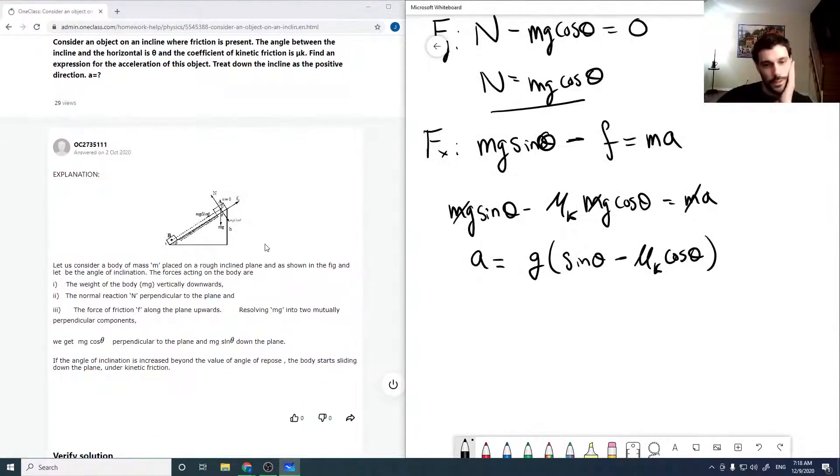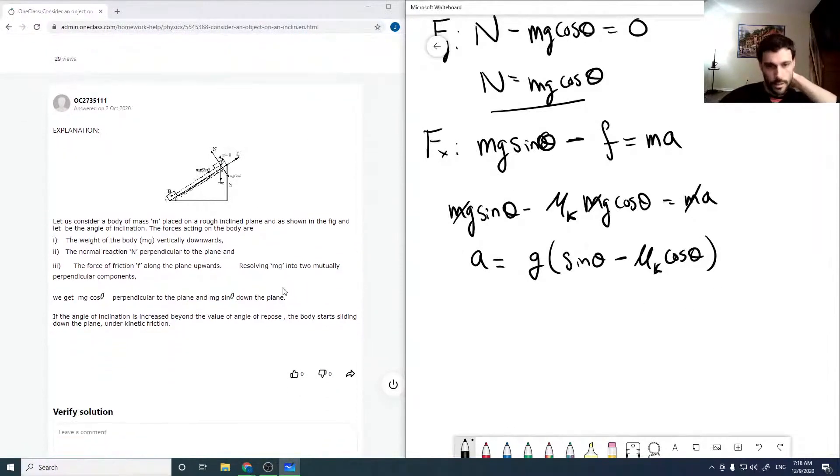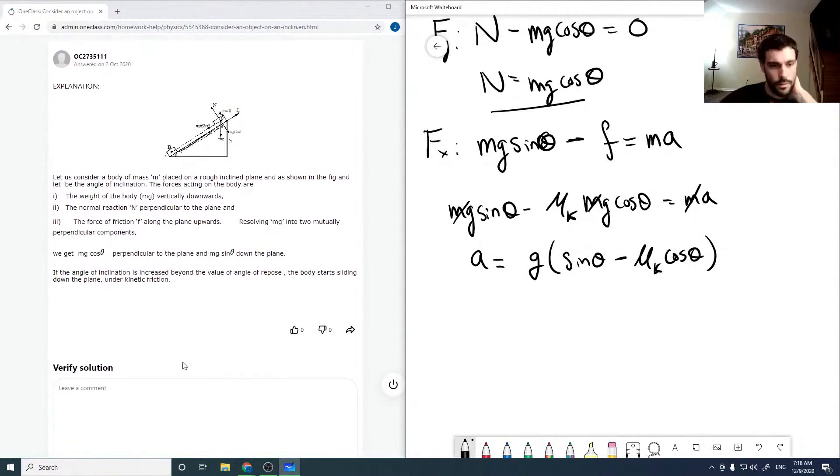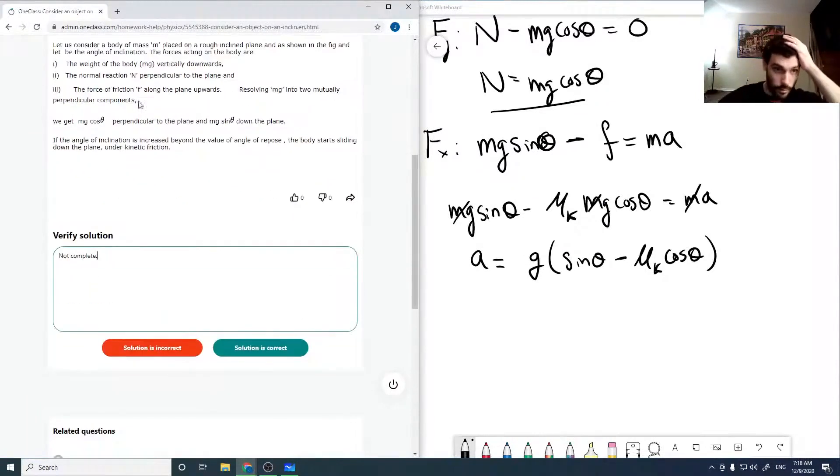Okay, let's look at the solution here. Body of mass m, the weight of the body vertically downwards, the normal perpendicular to the plane, force of friction upwards. So we can get mg cos theta and mg sine theta. Okay, that's not a complete solution. We can easily get our acceleration by just considering our forces. So this solution is not complete. It does describe some of the stuff I did, but it doesn't in any way solve the question, so I'm just going to say that's incorrect.